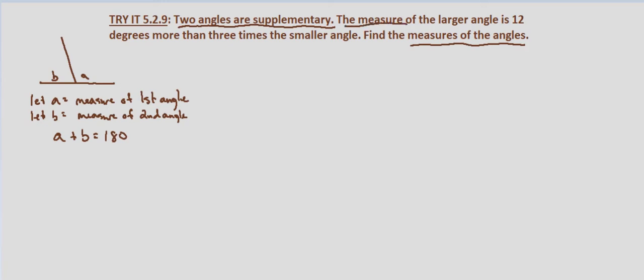We also know the measure of the larger angle is 12 degrees more than 3 times the measure of the smaller angle. So we're going with a as our larger angle. So a equals 12 degrees more than 3 times the smaller angle. So 3 times b, the measure of the smaller angle, plus 12.